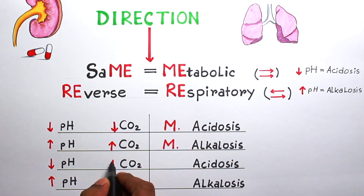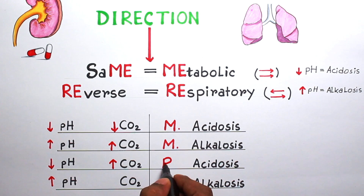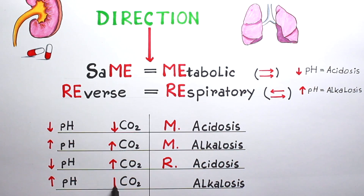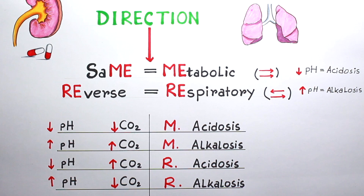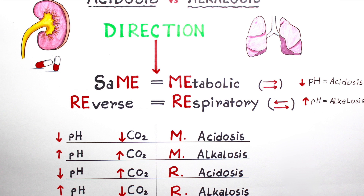But if pH is down and CO2 is up, then it will be respiratory acidosis, because the direction is opposite. Likewise, if pH is up and CO2 is down, it will be respiratory alkalosis. That's all, guys, but combined disorders may also be present, so always look for the bicarbonate levels.